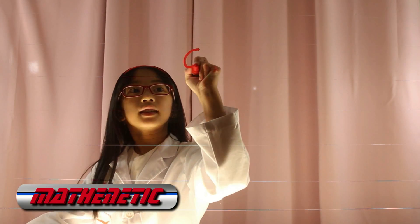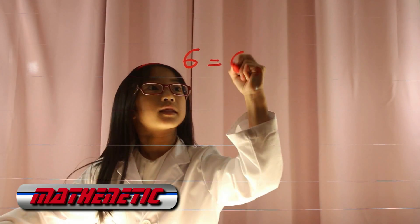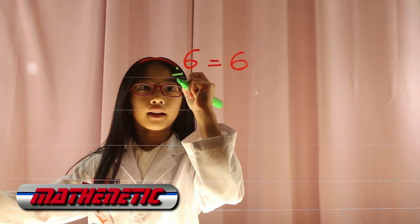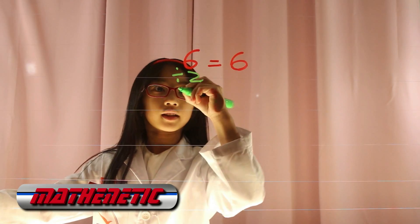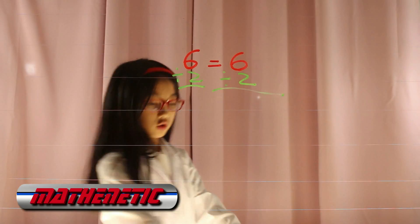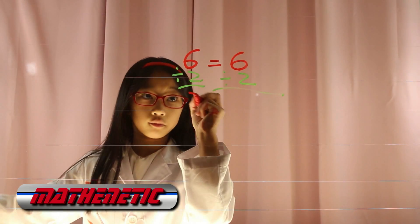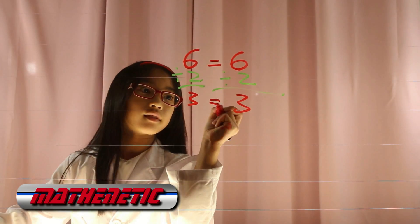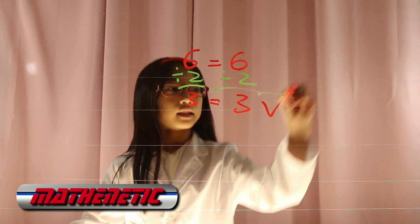I will prove to you that if you divide something on one side, then you have to divide on the other side too. Say you have 6 equals 6. You want to divide by 2 on one side; you also have to do it on the other side. 6 divided by 2 is 3, and 6 divided by 2 is also 3. 3 equals 3. Check!